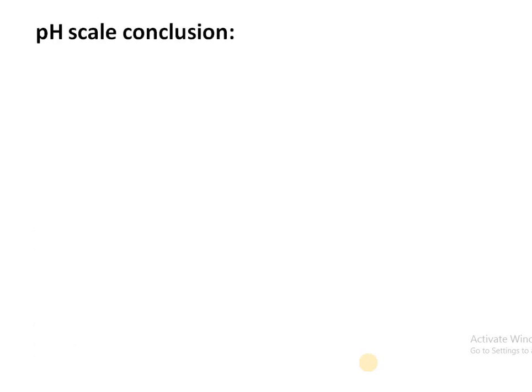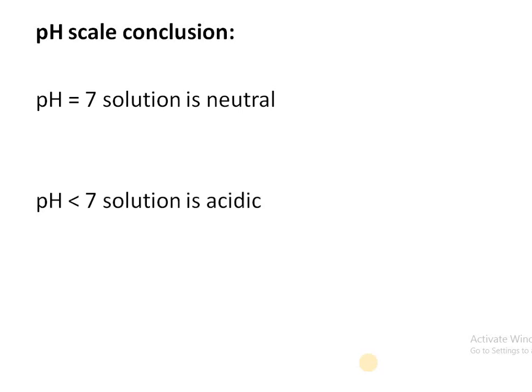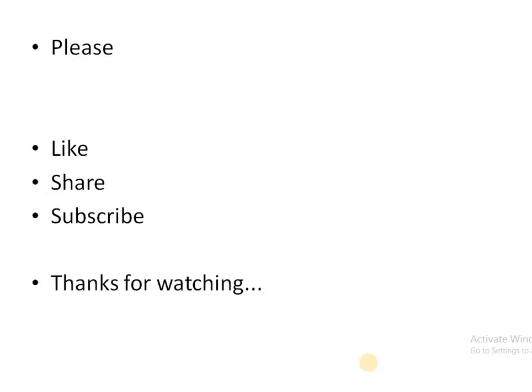In conclusion: pH equal to 7 means the solution is neutral. pH less than 7 means the solution is acidic in nature. pH greater than 7 means the solution is basic.